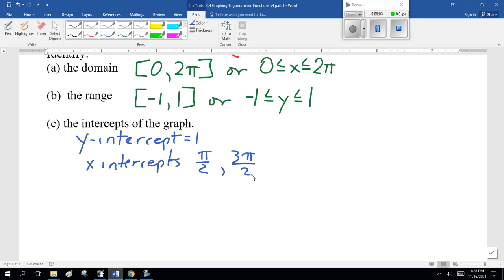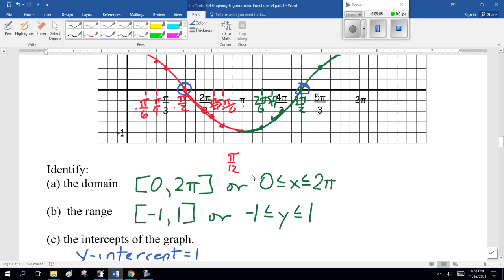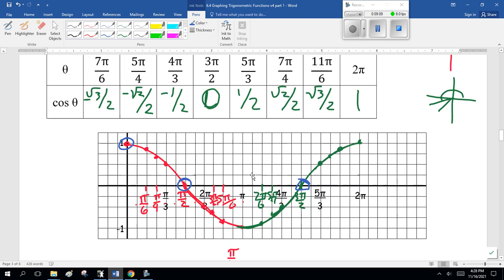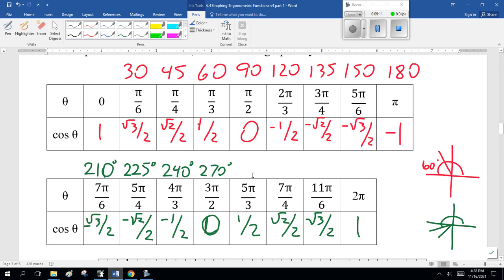And the intercepts. Notice here, pi over 2 and 3 pi over 2. And don't forget the y-intercept, y equals 1. Sneaky. So, y-intercept equals 1, x-intercepts pi over 2, 3 pi over 2. This, you've got to know. It's not a conversation.